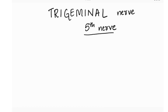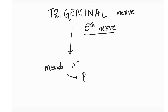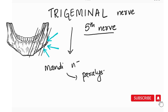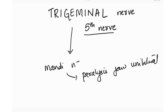The trigeminal nerve is the fifth nerve, and we're now looking at the mandibular nerve. Suppose there's an injury to the peripheral part of the mandibular nerve — this causes paralysis to one side of the jaw. We need to know which side the jaw deviates toward.